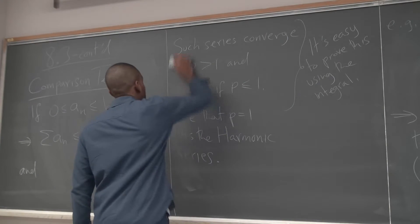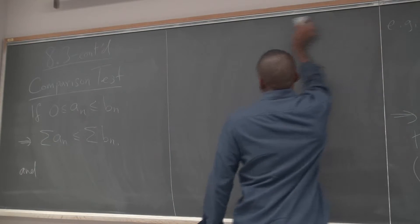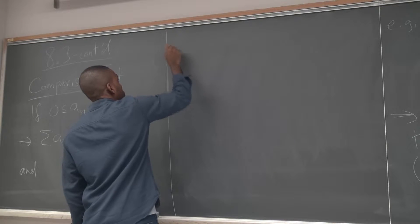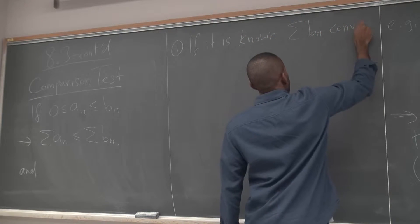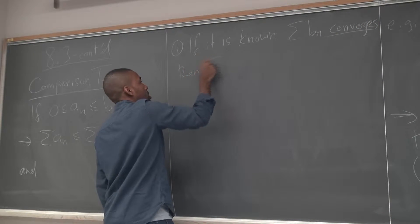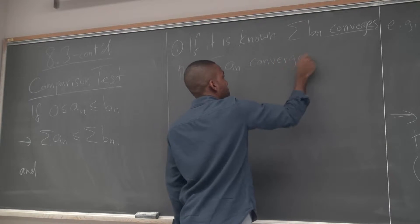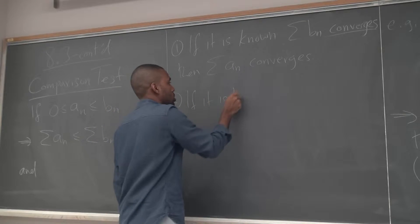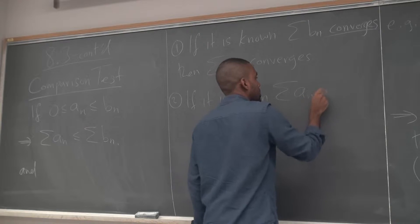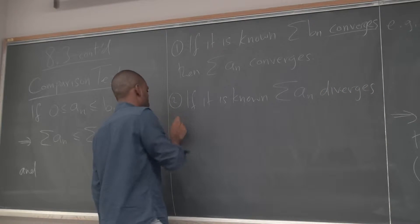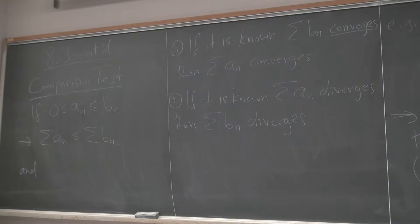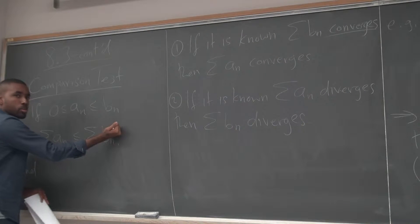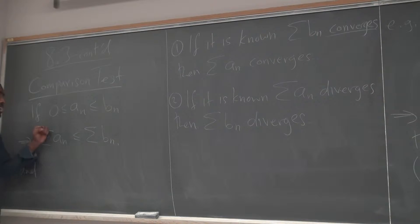Here's what the test says: we can basically talk about the convergence of one series with respect to the other depending on what's going on. One: if it is known that the series of b_n converges, then the series of a_n converges. Two: if it is known that the series of a_n diverges, then b_n diverges. This is the comparison test. If this guy stops at a number, then this guy will also stop at a number because it has to be less than it. Whereas if this guy goes off to infinity, this guy will also go off to infinity because it has to stay bigger than it.